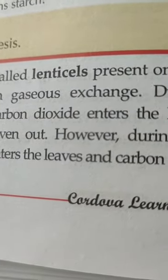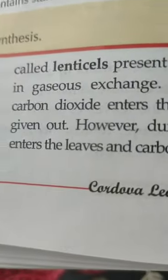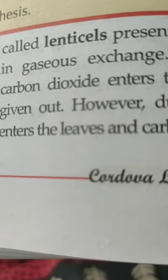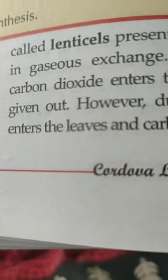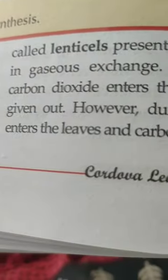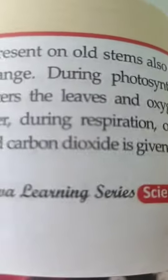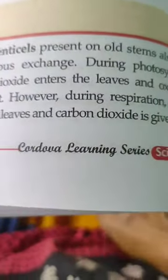During photosynthesis, carbon dioxide enters the leaves and oxygen is given out — plants take in carbon dioxide and release oxygen. However, during respiration, oxygen enters the leaves and carbon dioxide is given out — just the reverse. Like animals, plants take in oxygen and release carbon dioxide during respiration.